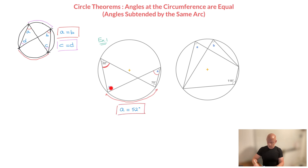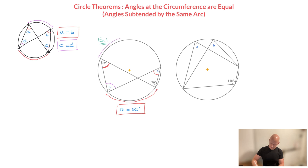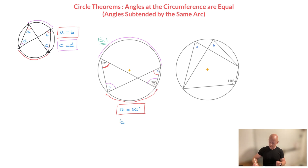Now we look at angle B, which again is an angle at the circumference, and we ask ourselves which arc is subtending this angle. Looking at angle B, the arc forming it is the one up here. We also notice that this other angle of 70 degrees is also subtended by this same arc. Consequently, we can use the same theorem again to state that angle B must equal 70 degrees. So B equals 70 degrees, and we're done.